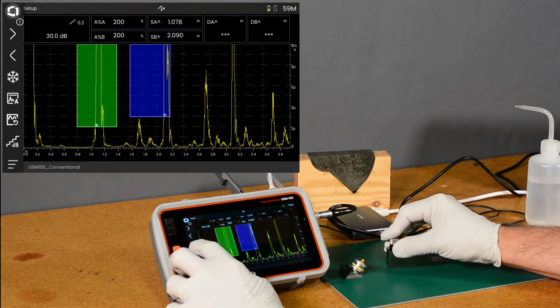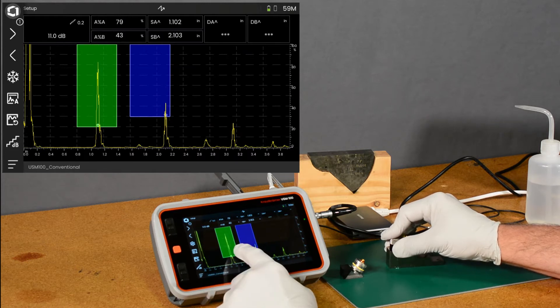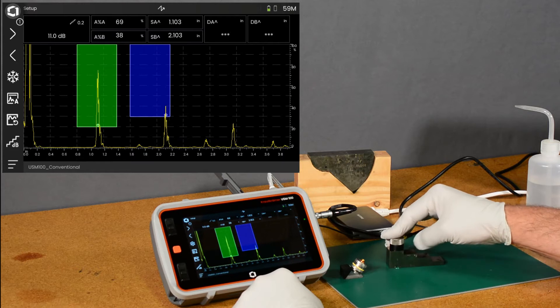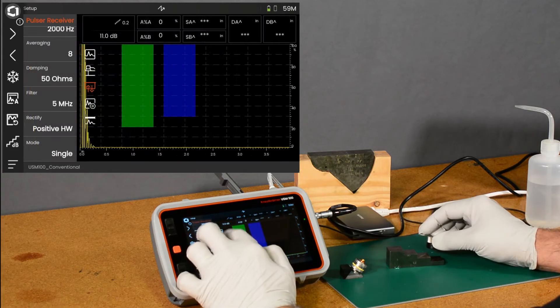So we can take our gain down some. We'll use the auto 80 function to get the gain on the 1 inch block in gate A nicely at 80%. Let's close that,